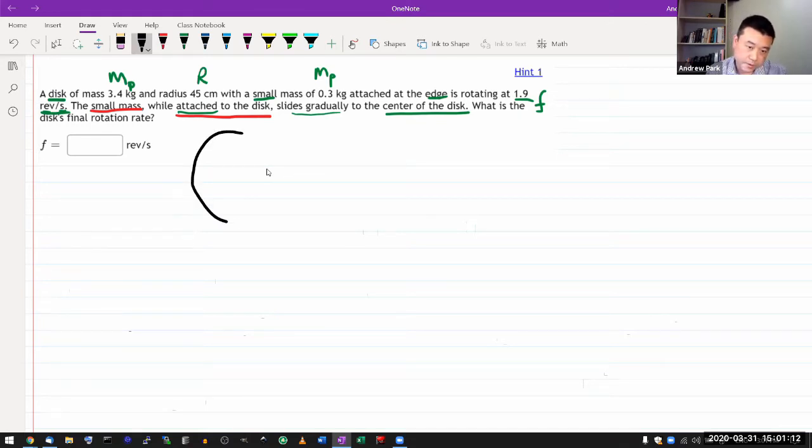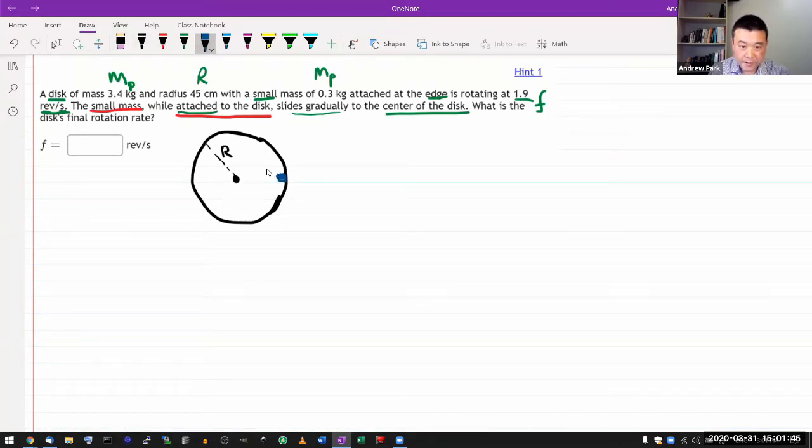Here's the disk of radius R, and there's a small mass attached to it. Let me draw the small mass here. And I said the small part was going to be important. I'm basically treating this mass as so small that I can treat it like a point mass.